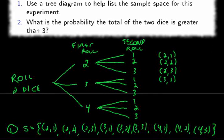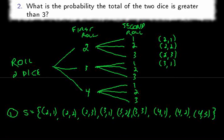Number two, what is the probability the total of the two dice is greater than three? So for number two, we're going to go back to the tree diagram and identify those outcomes where the total of the dice is greater than three.